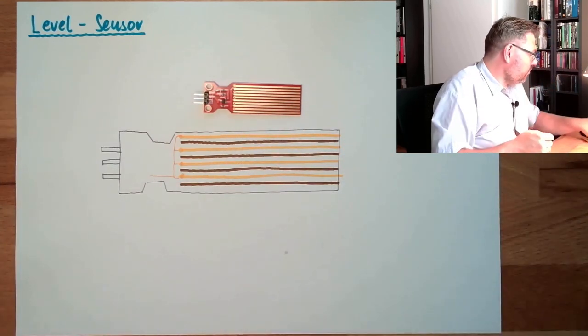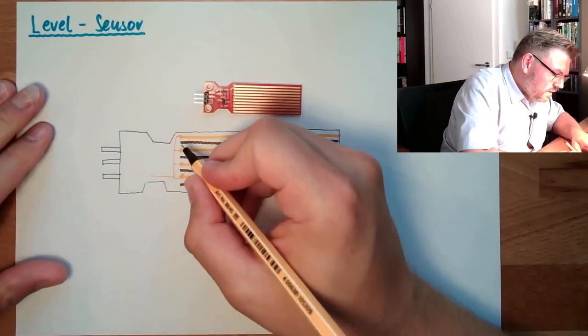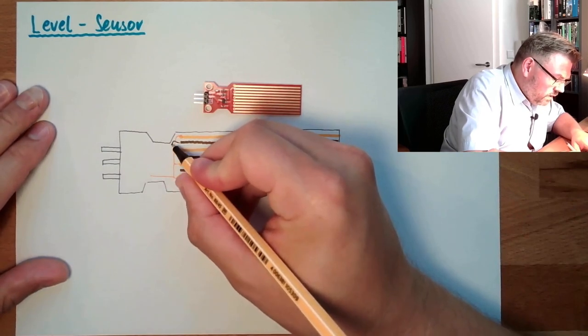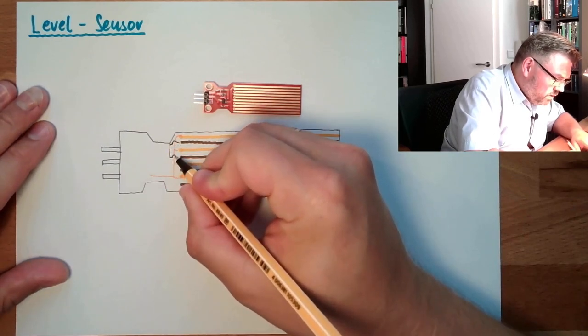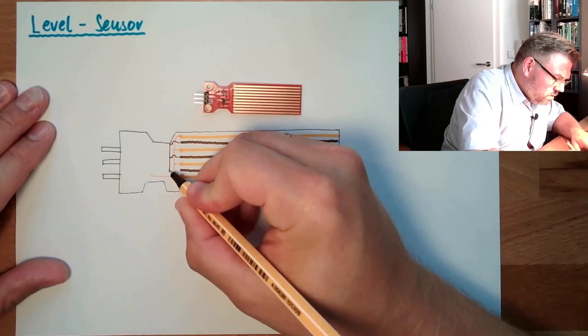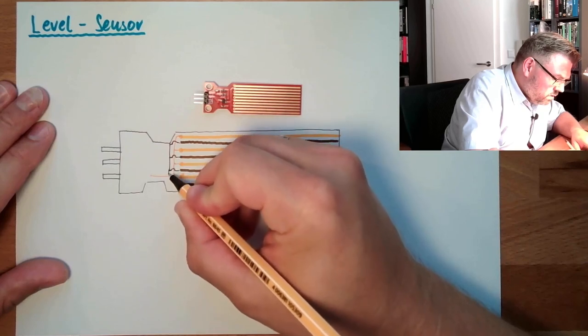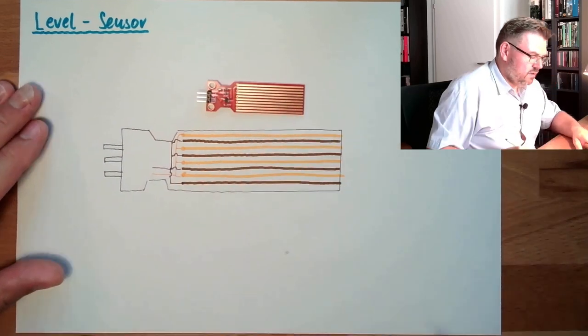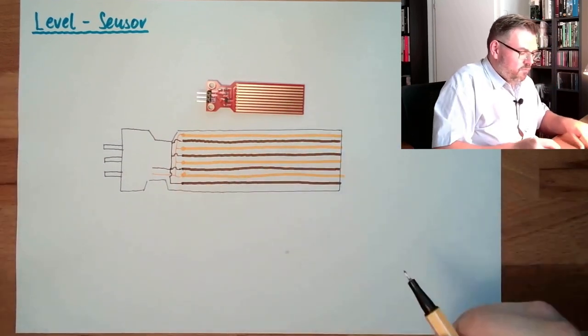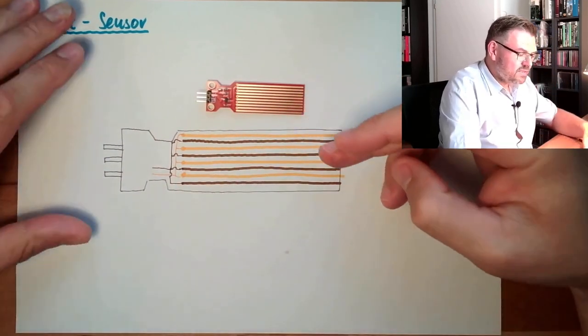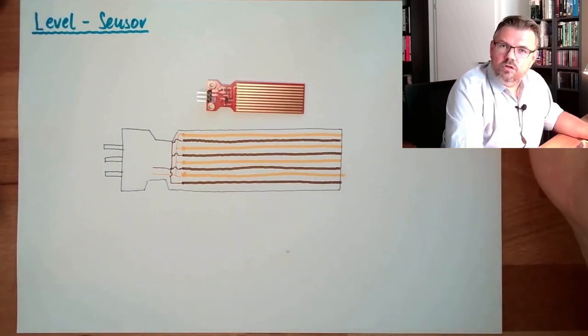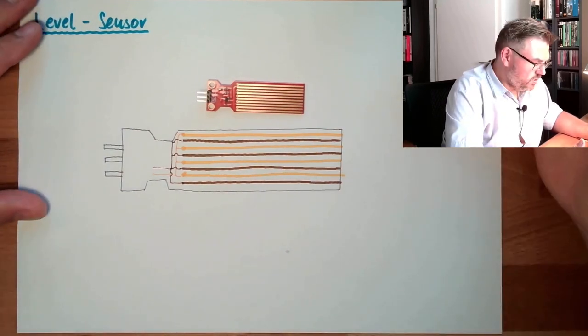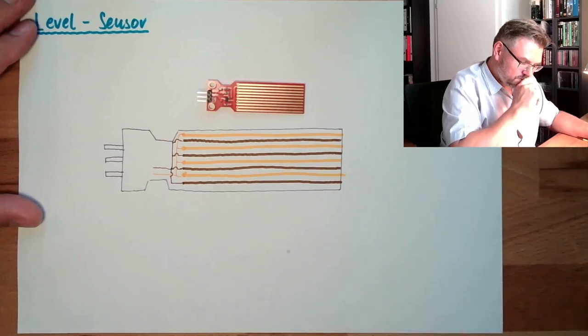And the brown ones, they are also connected but not, and this is important, not to the orange side. So basically, those two sides are isolated. They are isolated to each other.